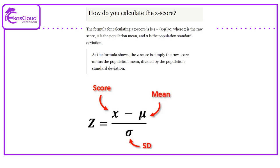The formula for calculating a z-score is z equal to x minus mu divided by sigma, where x is the raw score, mu is the population mean, and sigma is the population standard deviation.